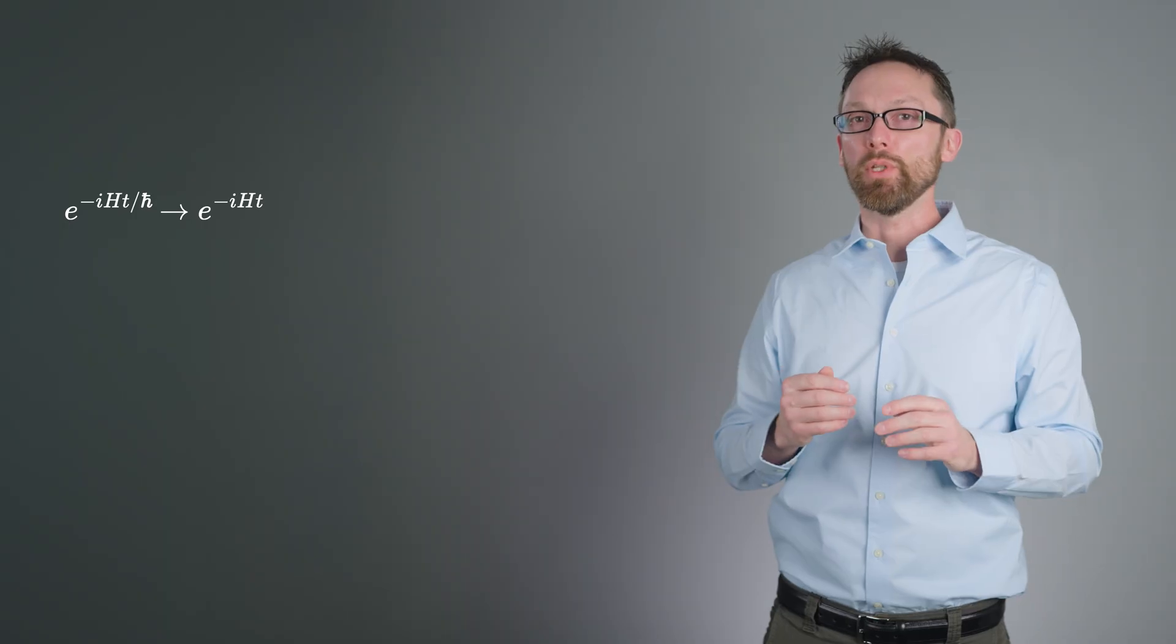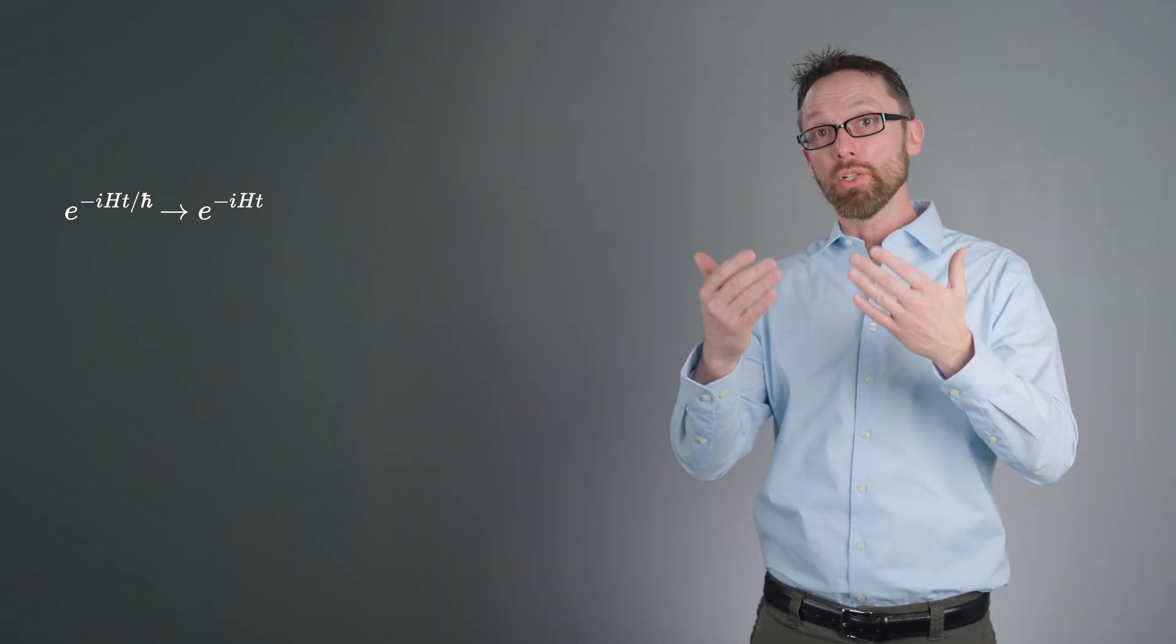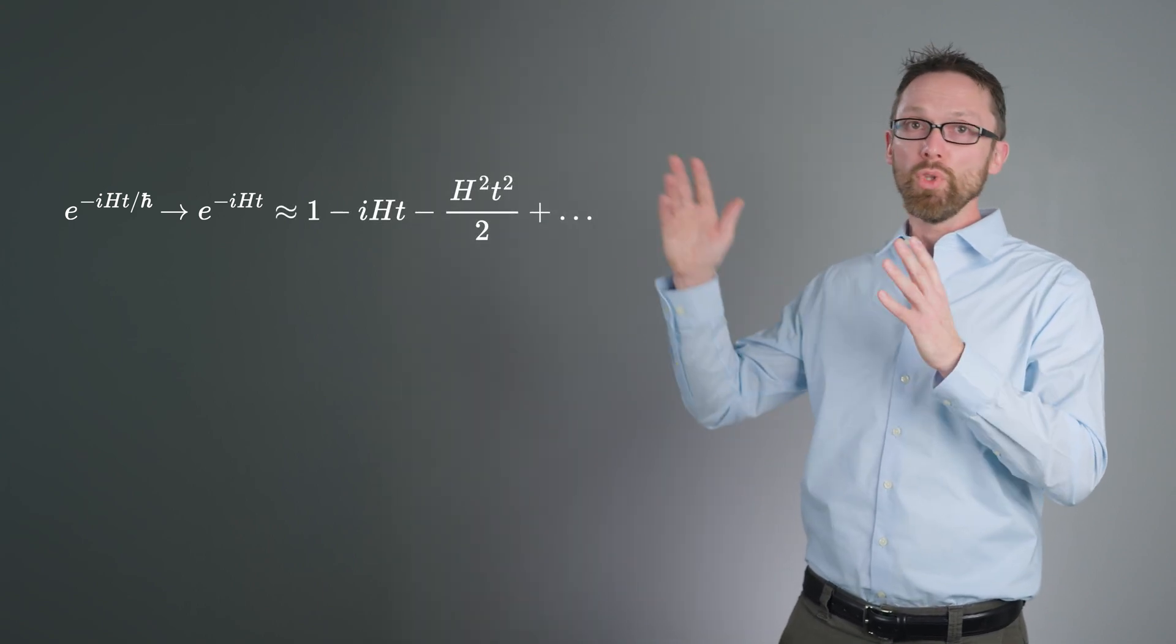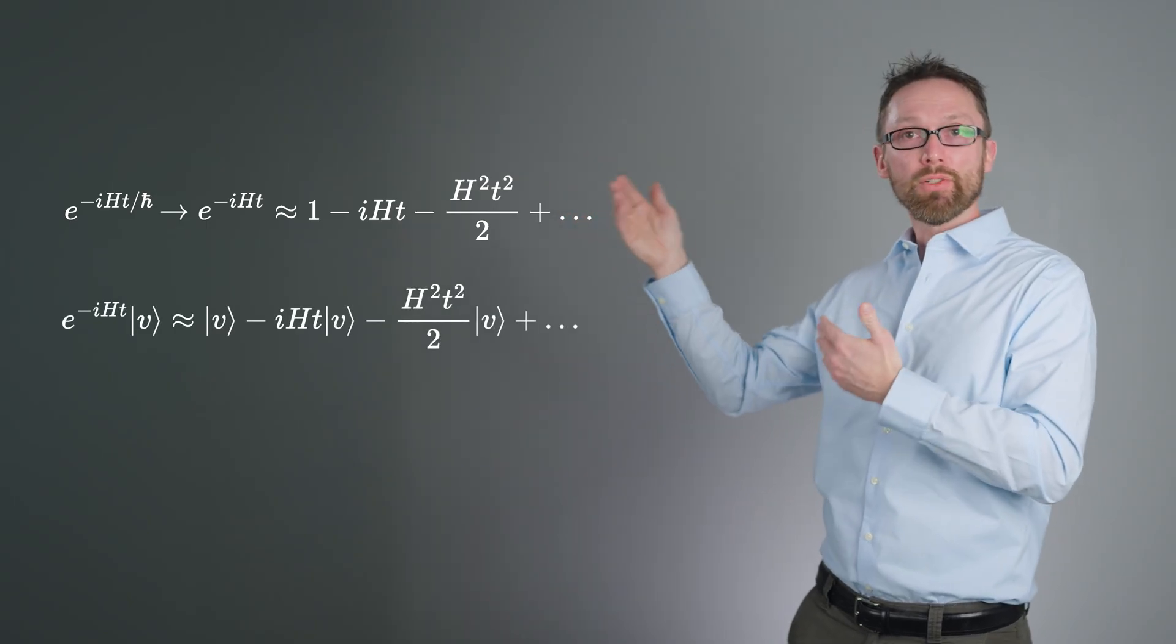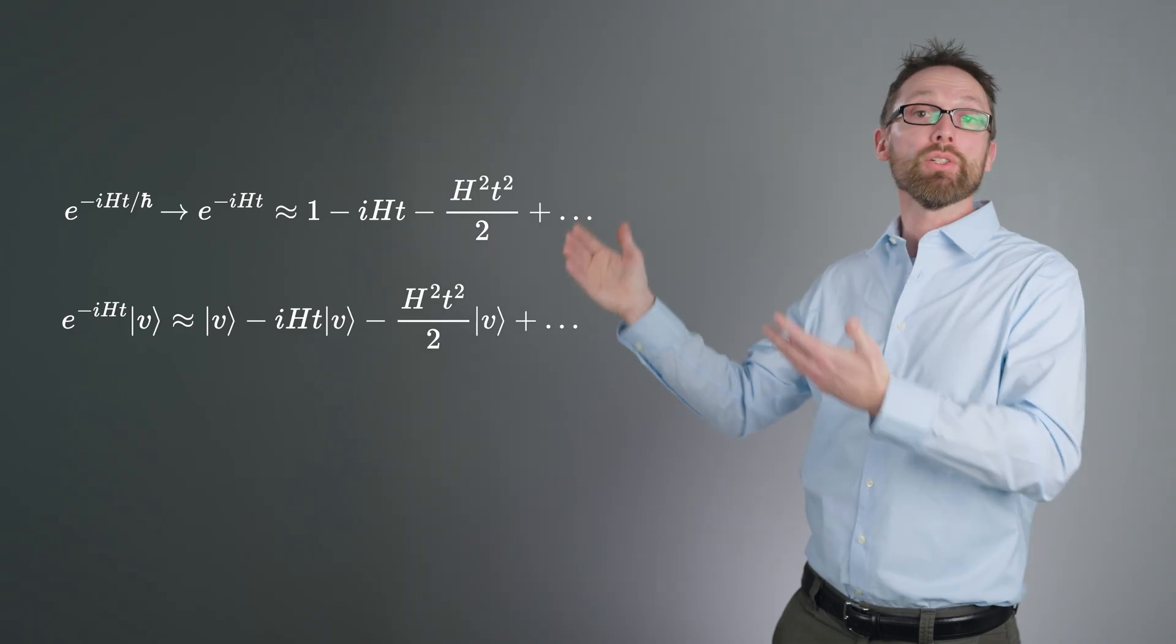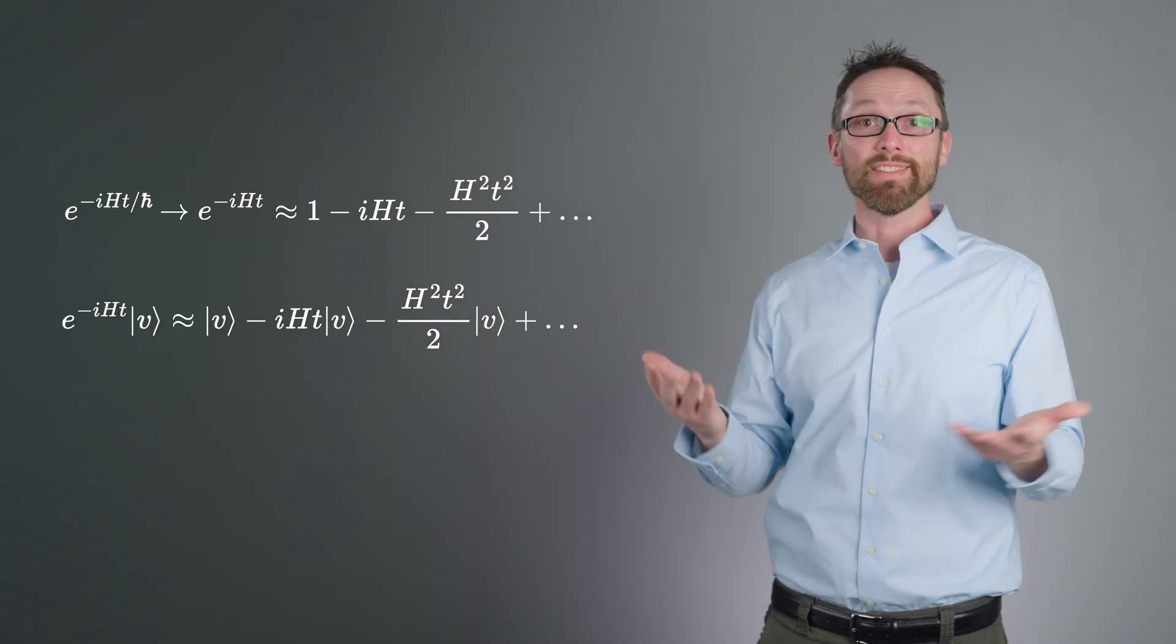Recall that the operator that time evolves a quantum state is the exponential of negative i ht over h-bar. And it's very common, especially in quantum computing, to drop the h-bar from the notation. One way of understanding and even realizing such an exponential function of an operator is to look at its Fourier series expansion. Note that this operation, acting on some initial vector v, yields a sum of terms with increasing powers of h applied to the initial state. It looks like we can just make our Krylov subspace by time-evolving our initial guess state. And that's almost true.